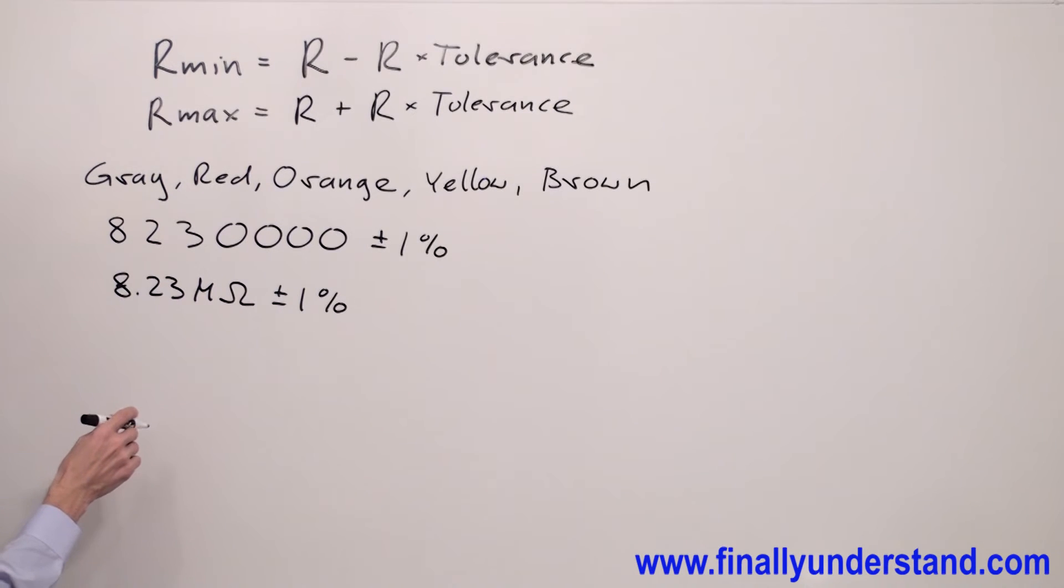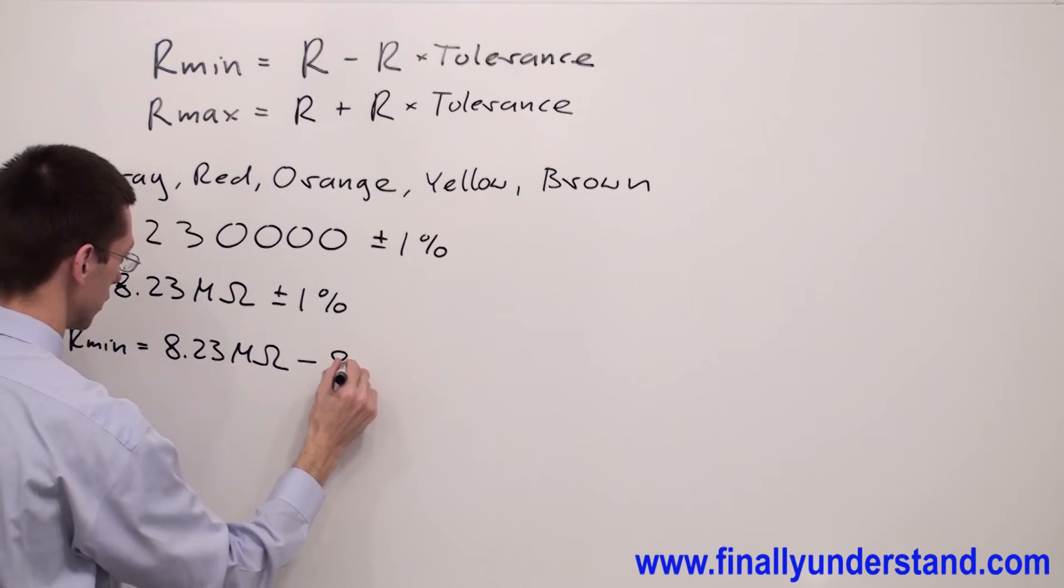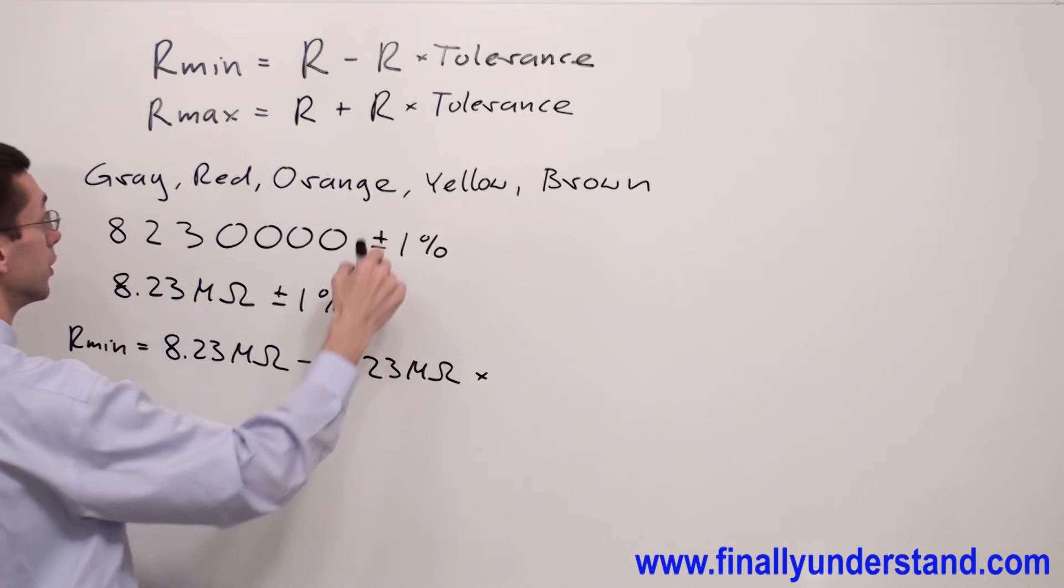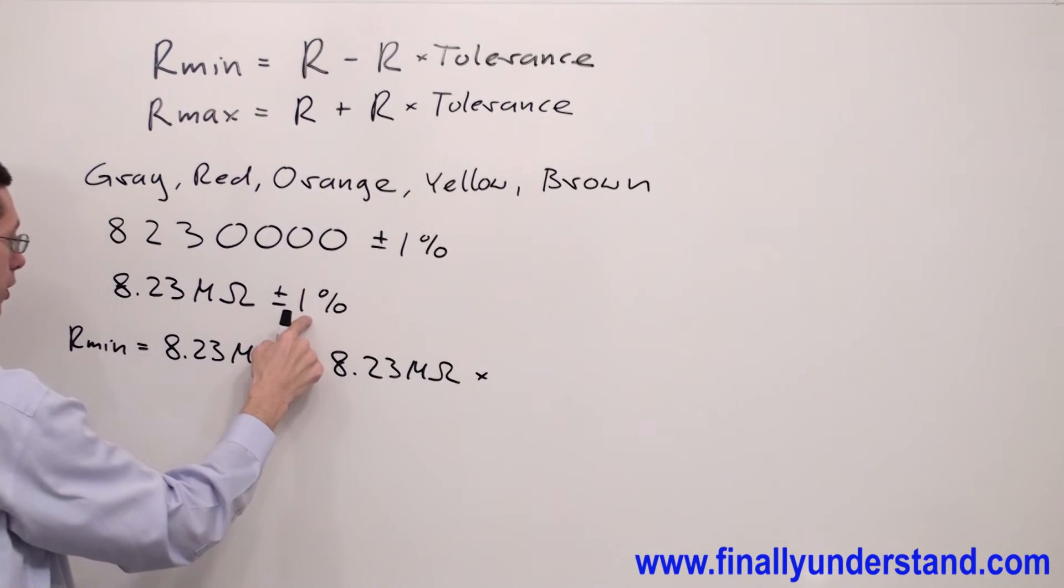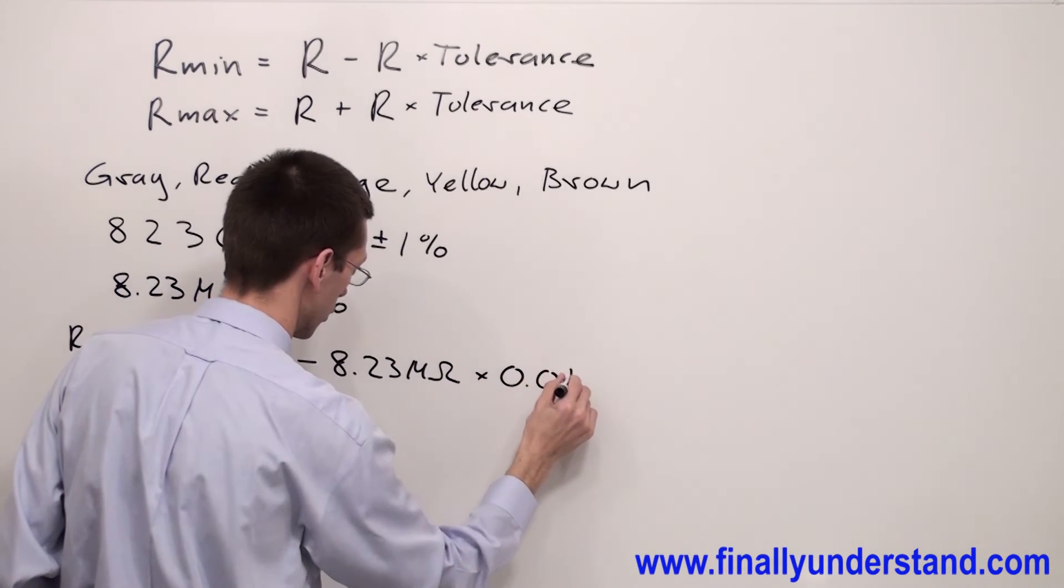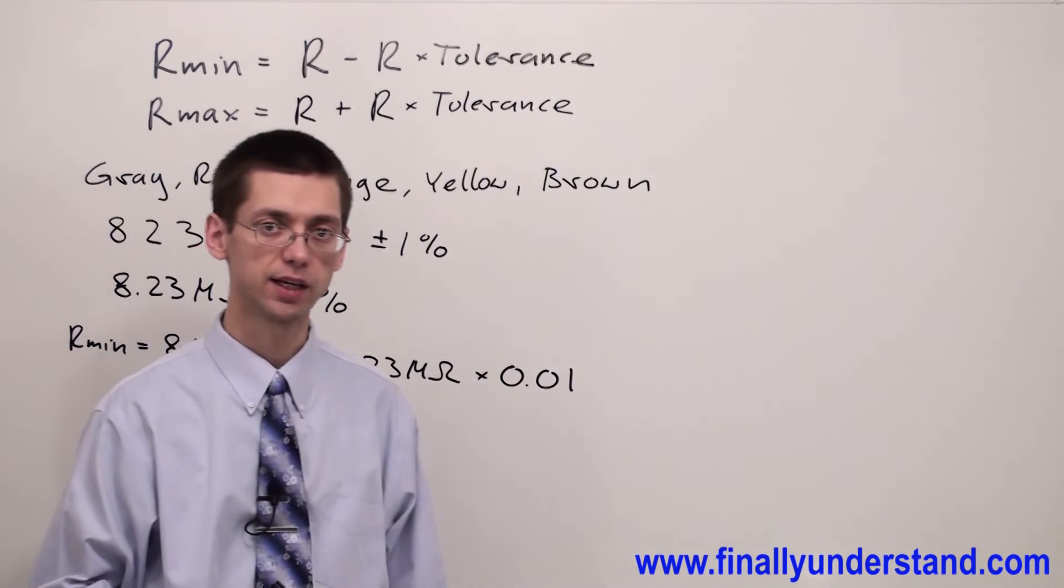Next, I'm supposed to plug in these two values into my formulas. R minimum equals the nominal value 8.23 mega ohms minus R which is 8.23 mega ohms times the tolerance. The tolerance is 1%, which is simply one hundredth. Next we're supposed to enter these values into the calculator. We're going to use a scientific calculator.